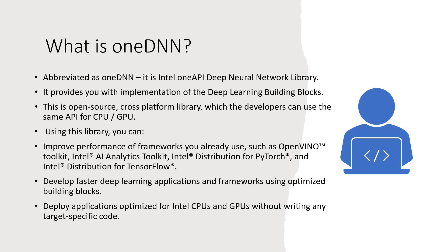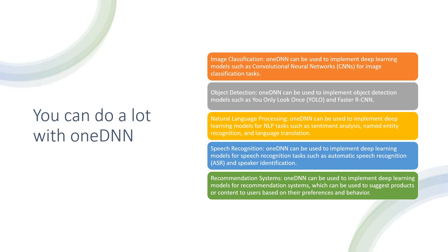With this library, you can improve the performance of the frameworks that you are already using and are very much aware of, like OpenVINO, like the AI Analytics Toolkit, the Intel Distribution for PyTorch and TensorFlow. This is going to help you in faster development as well as optimized building block development. You can deploy applications optimized for Intel CPUs and GPUs without having to write any target-specific code. That's the best part of it.